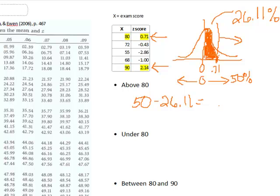It does take a little extra calculation, but we can see here it is just a subtraction of 26.11 from 50. This tells us that 23.89% of the area falls above a z-score of 0.71.